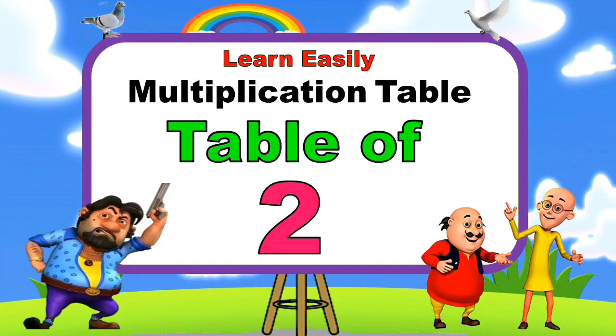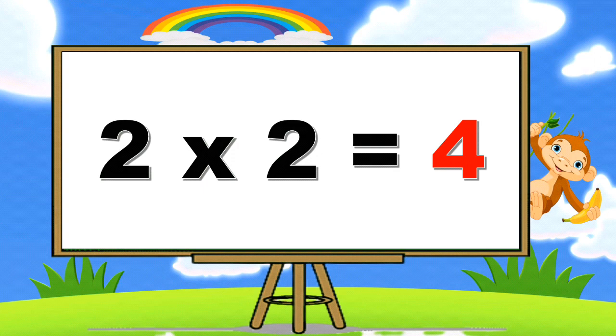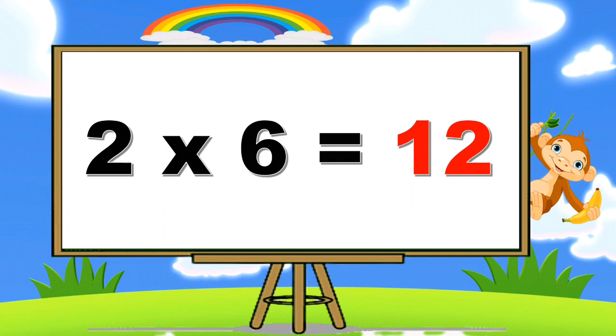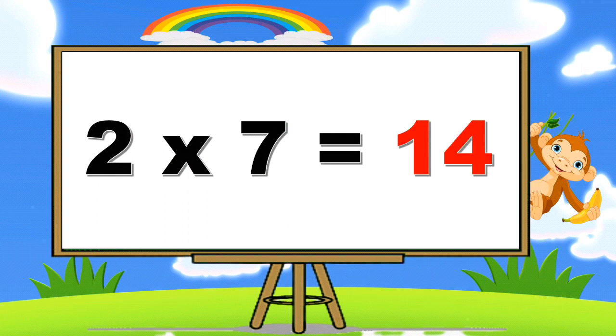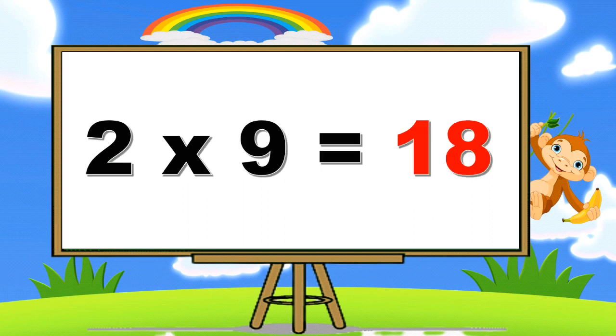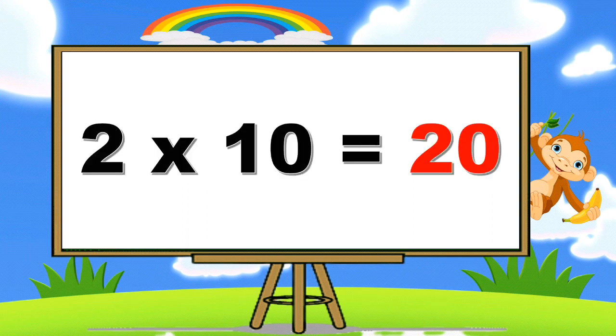Table of 2. 2 ones are 2, 2 twos are 4, 2 threes are 6, 2 fours are 8, 2 fives are 10, 2 sixes are 12, 2 sevens are 14, 2 eights are 16, 2 nines are 18, 2 tens are 20.